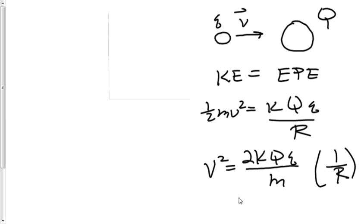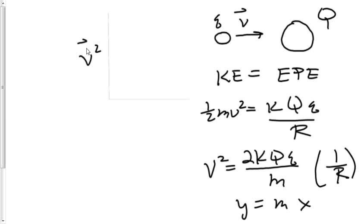So we're in the equation in the form of y equals mx — y is equal to the slope multiplied by an x variable. We notice if I graph velocity squared — and I'll put a vector arrow on that just to clarify that's not a voltage — versus 1 over r, we should get a straight line. I'll just do a little scatter plot here. We should get a straight line, a linear relationship.